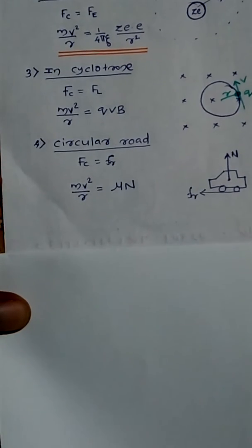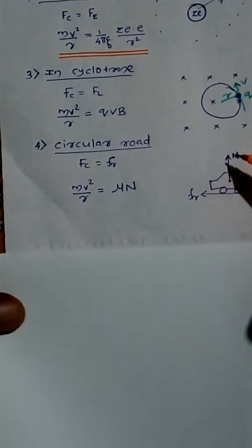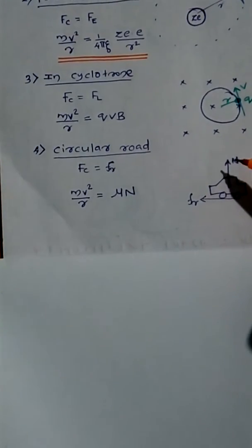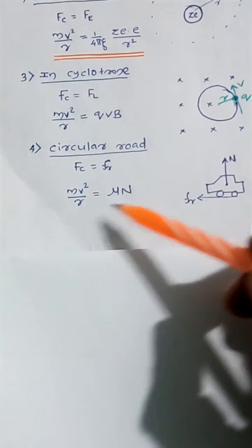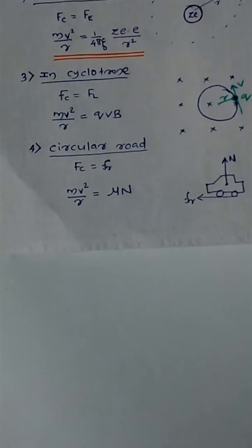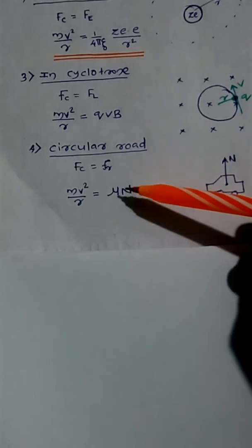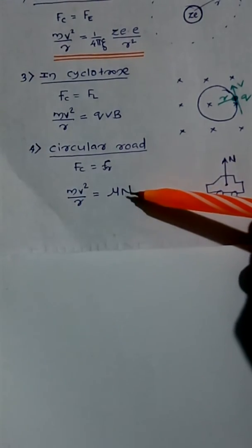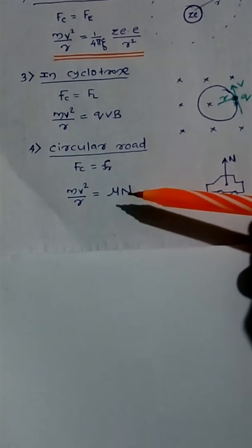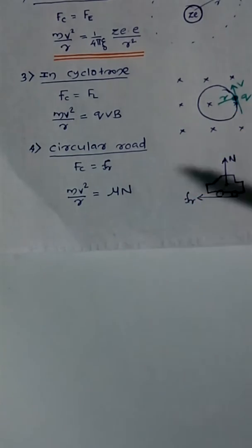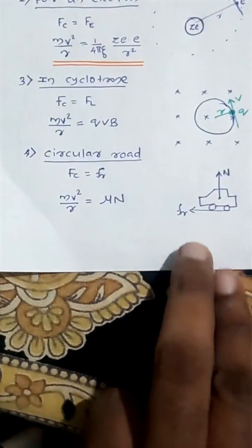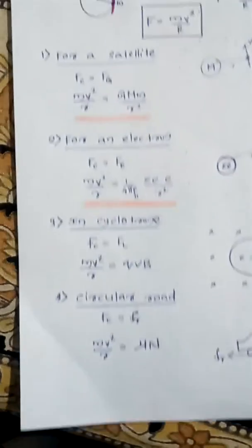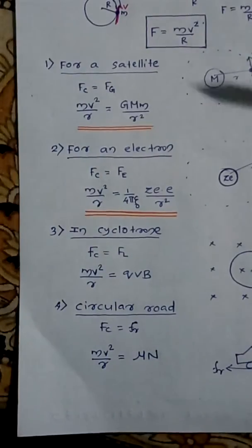Another case is a circular flat road. If a car is taking a turn on a circular path of radius r, the necessary centripetal force mv²/r is provided by the frictional force. The frictional force is directly proportional to the normal reaction N, and equals μN. So mv²/r = μN.